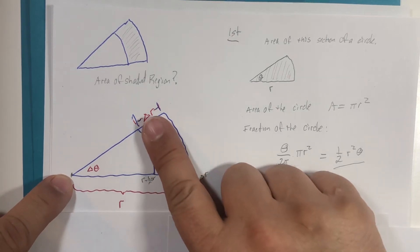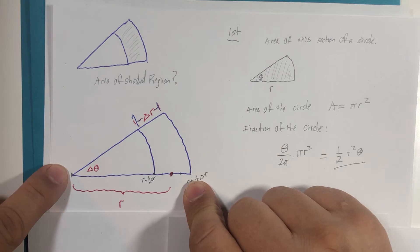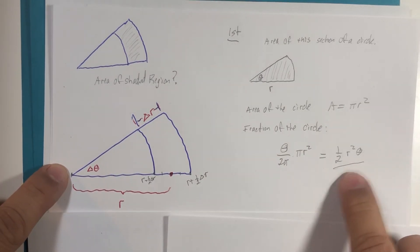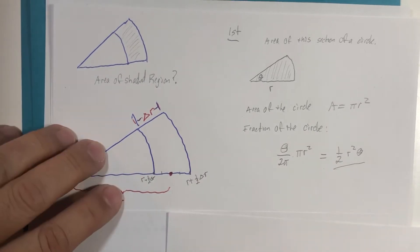So again, find the area of this, find the area of the entire slice using this formula—should give us the area of this region in between. So here we go.